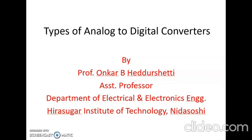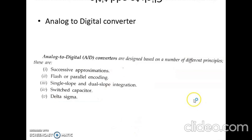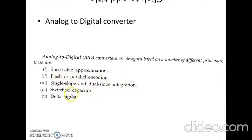Now let us discuss different types of analog-to-digital converters. An analog-to-digital converter converts an analog signal into digital form. Based on different design principles, there are different analog-to-digital converters. These design principles include successive approximations, flash or parallel encoding, single slope and dual slope integration, switched capacitor, and delta sigma. Now let us study some of these analog-to-digital converters.